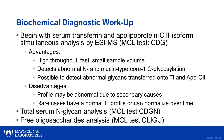Transferrin and apolipoprotein C3 isoform analysis are the initial screening tests for CDG. Alterations in the number or structure of these forms can be captured via electrospray ionization mass spectrometry, which is a powerful technique capable of detecting both N and mucin-type core 1 O-glycosylation errors. The technique is capable of processing a high volume of samples per day with a minimal sample volume. Two disadvantages, though, are that in rare instances, affected patients may have a normal profile and unaffected patients may have abnormalities due to secondary causes.